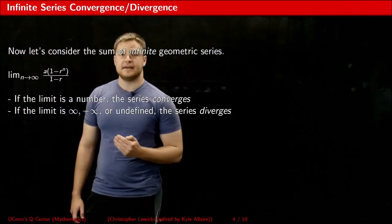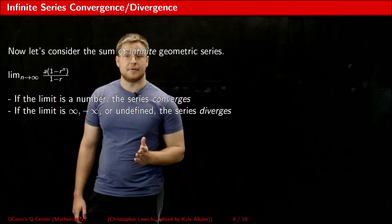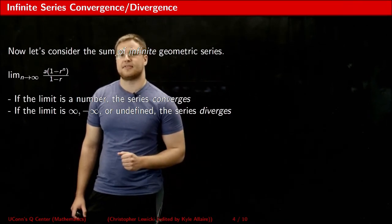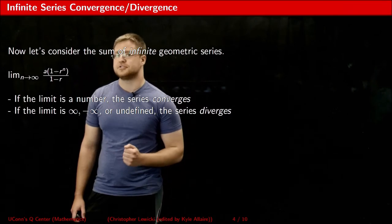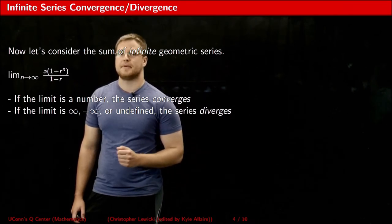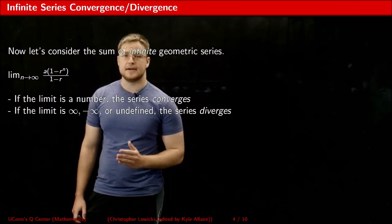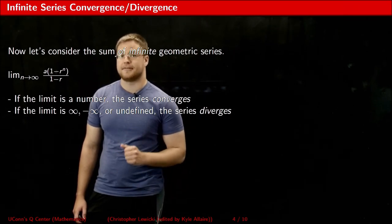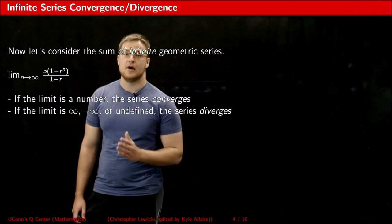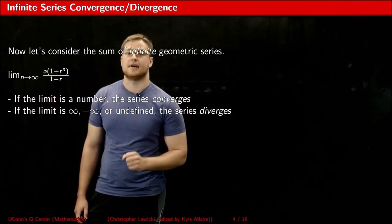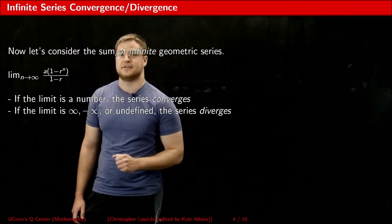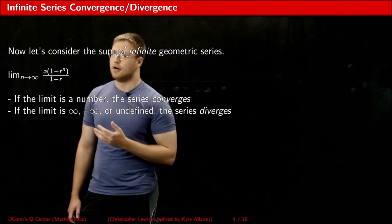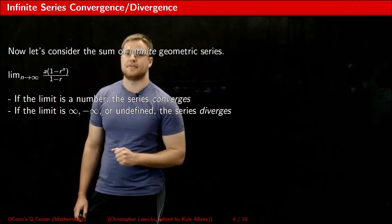If the limit is a finite number, that means the sum of the series is a finite number, and that by definition means that the series converges. In contrast, if the limit happens to be positive infinity, negative infinity, or something undefined, that means that the sum of a particular series is undefined, which is the very definition of diverging. What's going to happen to this limit all depends on what the r value happens to be.